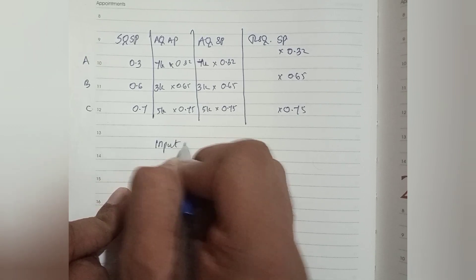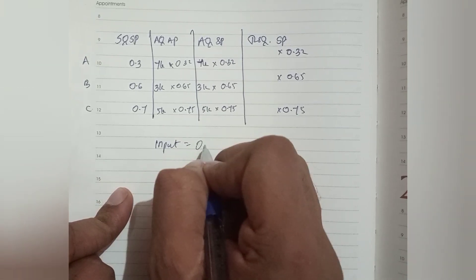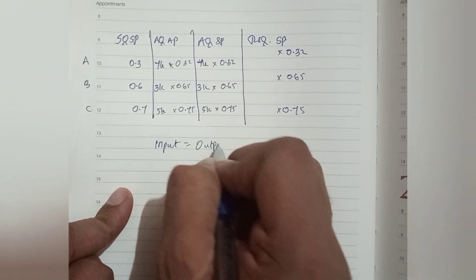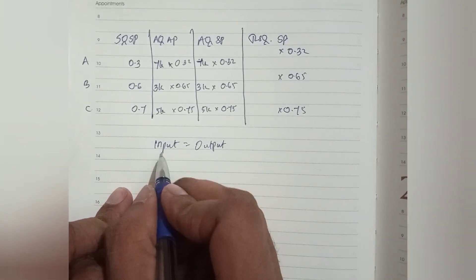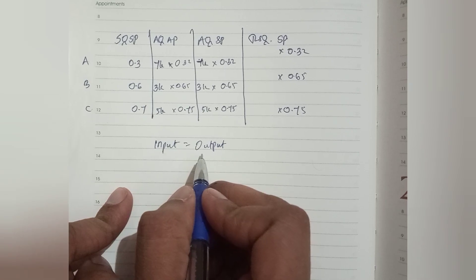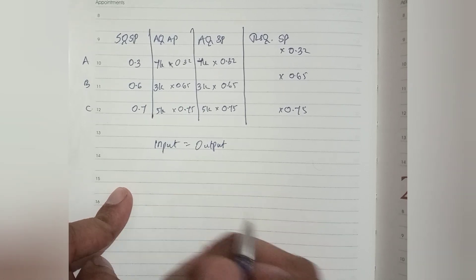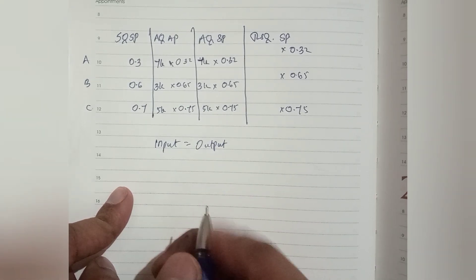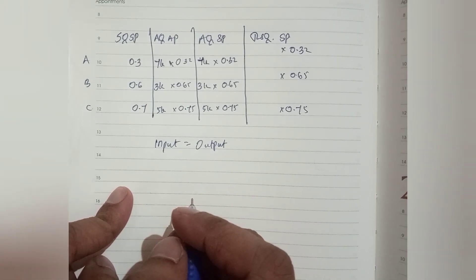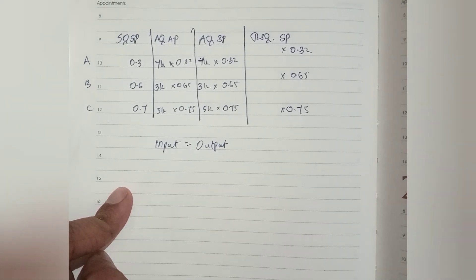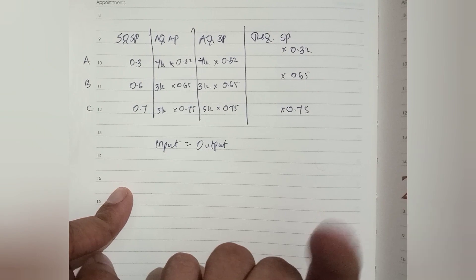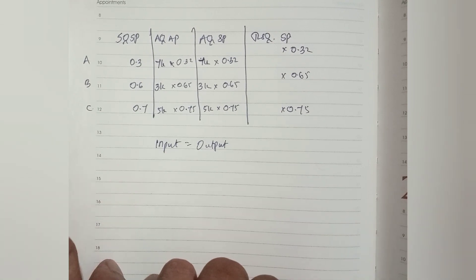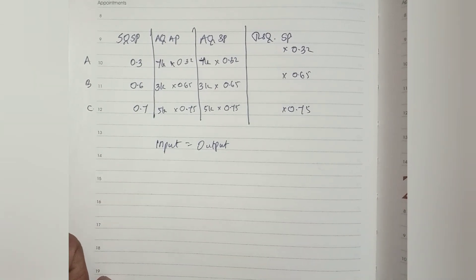Input equals output. In this case, I am going to add losses. But what is the question? Loss is not given. So what are the actual figures?